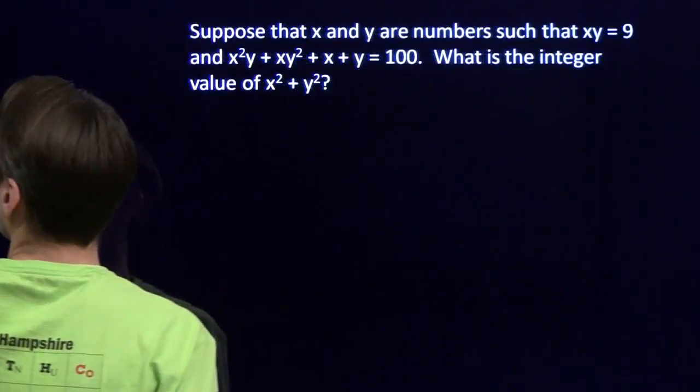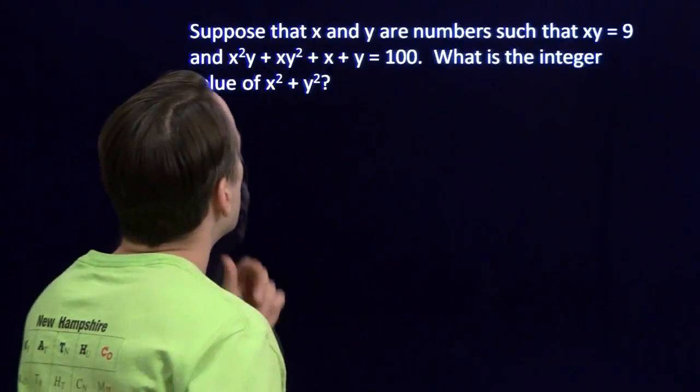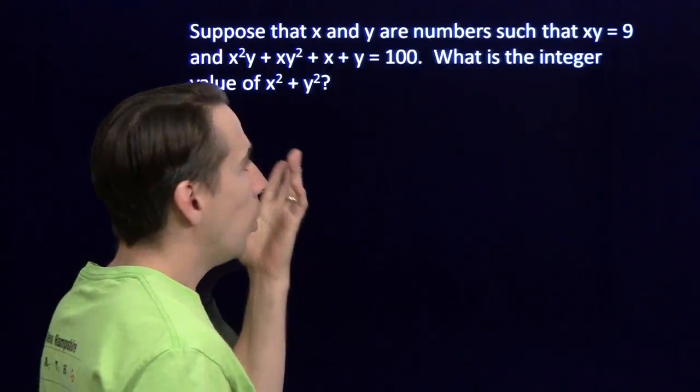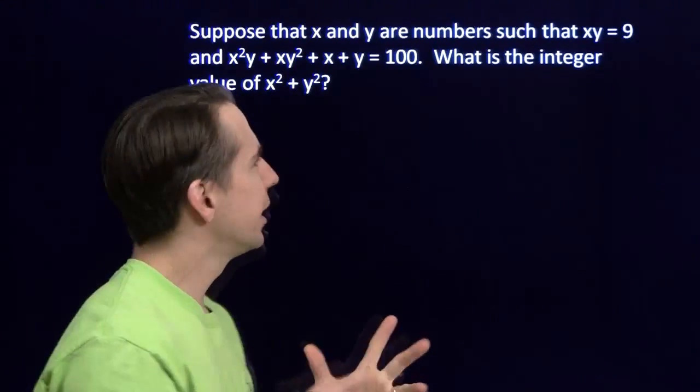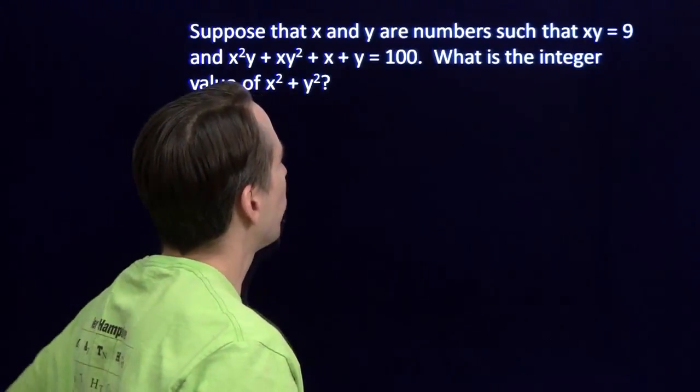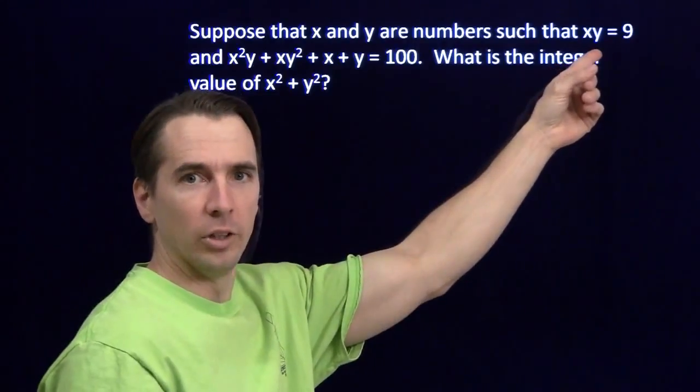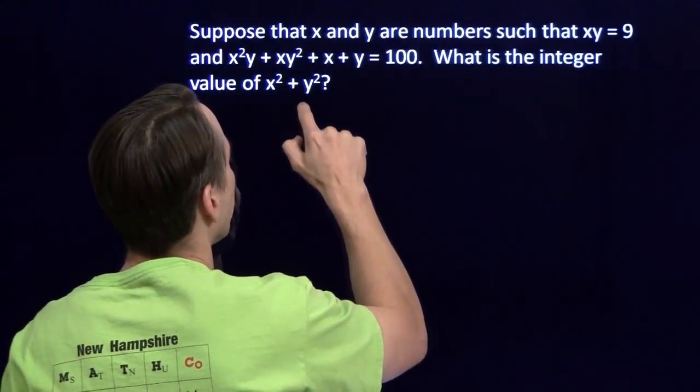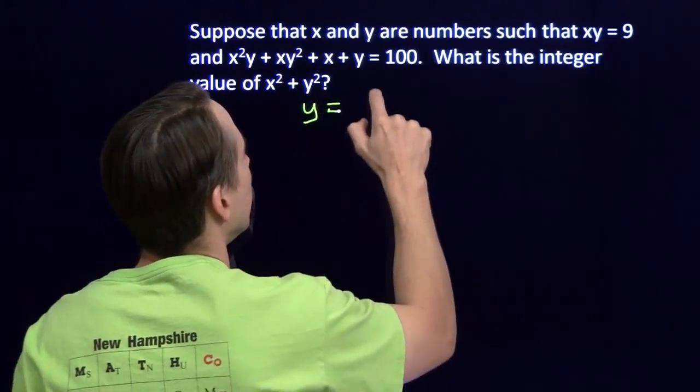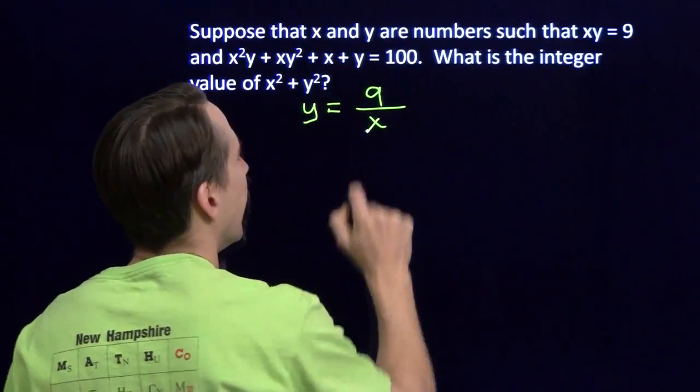We have x and y again. X times y is 9, and then we have this giant, kind of scary equation. We'll start with this. Let's start with the easy equation. I can solve for y. I can write this as y equals 9 over x.